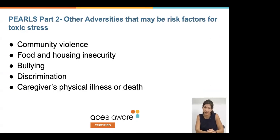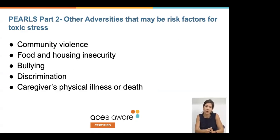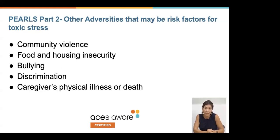Part 2 of the PEARLS screening addresses other adversities that may be risk factors for toxic stress, getting into some of the unmet social needs your patients might be experiencing. It is not included in the original ACE score because while there is strong data linking ACE scores to health outcomes, there is not yet equivalent data on how these other unmet social needs impact health outcomes — though ongoing research is exploring this. These Part 2 questions cover community violence, food and housing insecurity, bullying, discrimination, and caregiver physical illness or death.